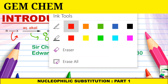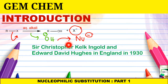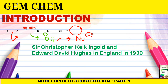This particular mechanism was clearly described and understood, and all its features were written down in a note. This discovery was done by Sir Christopher Ingold and Edward David Hughes in England in 1930. This is the first milestone in nucleophilic substitution reaction for the saturated carbon — where only single bonds are present and there are no double or triple bonds.